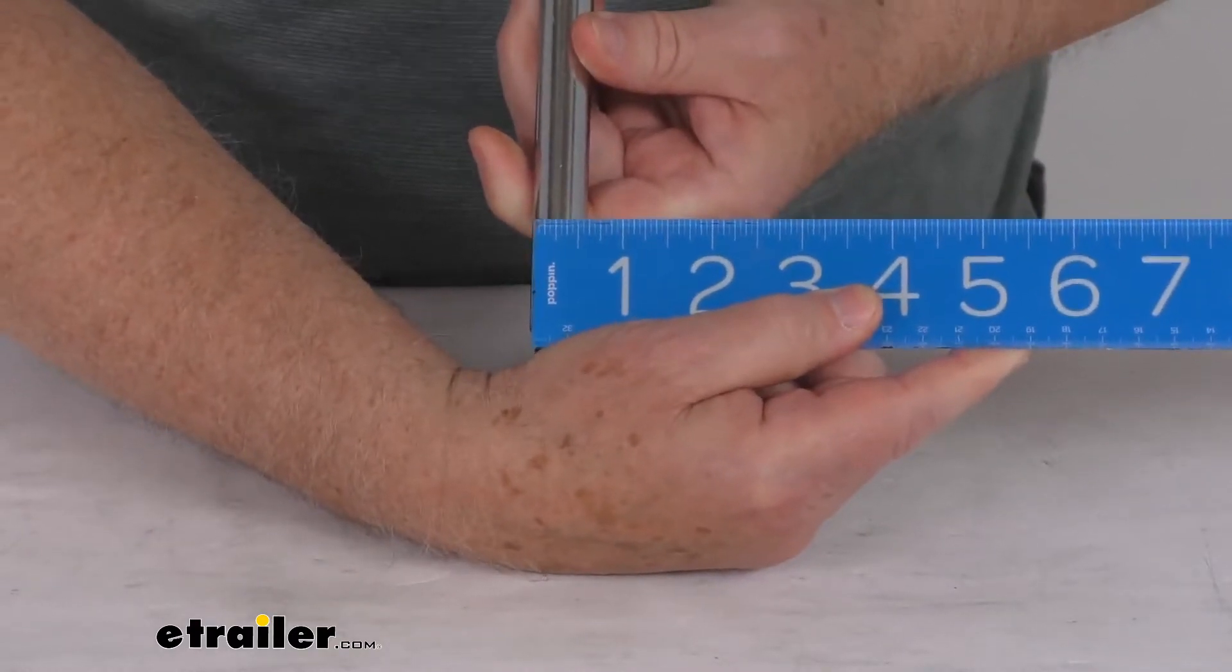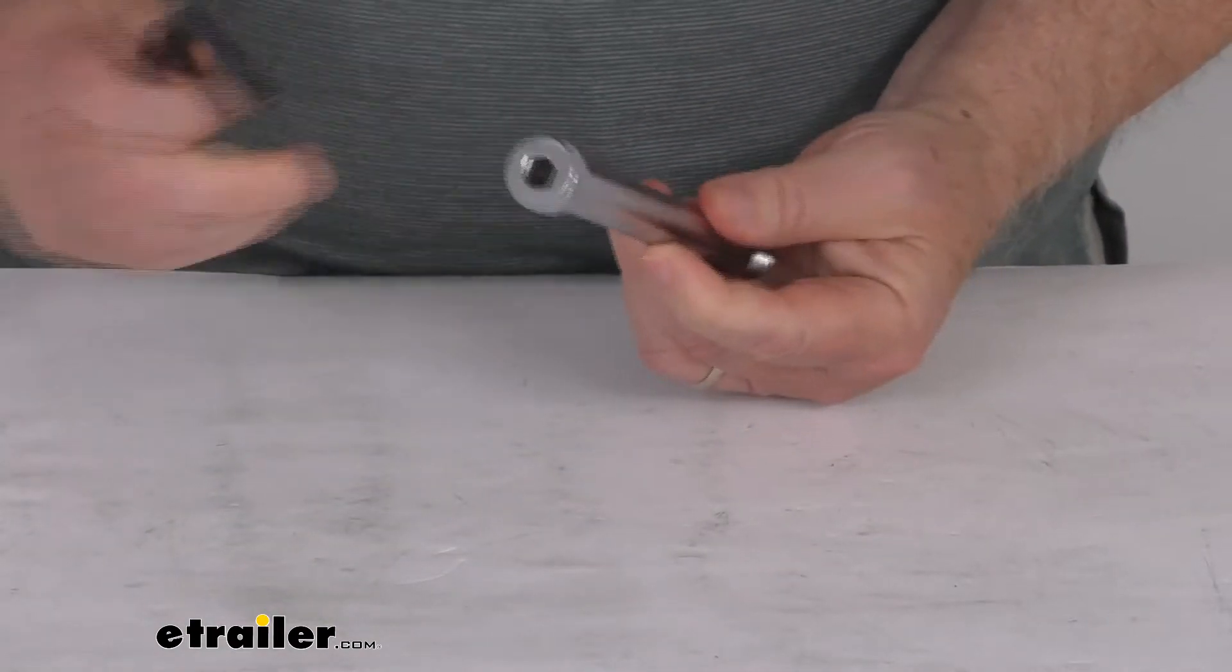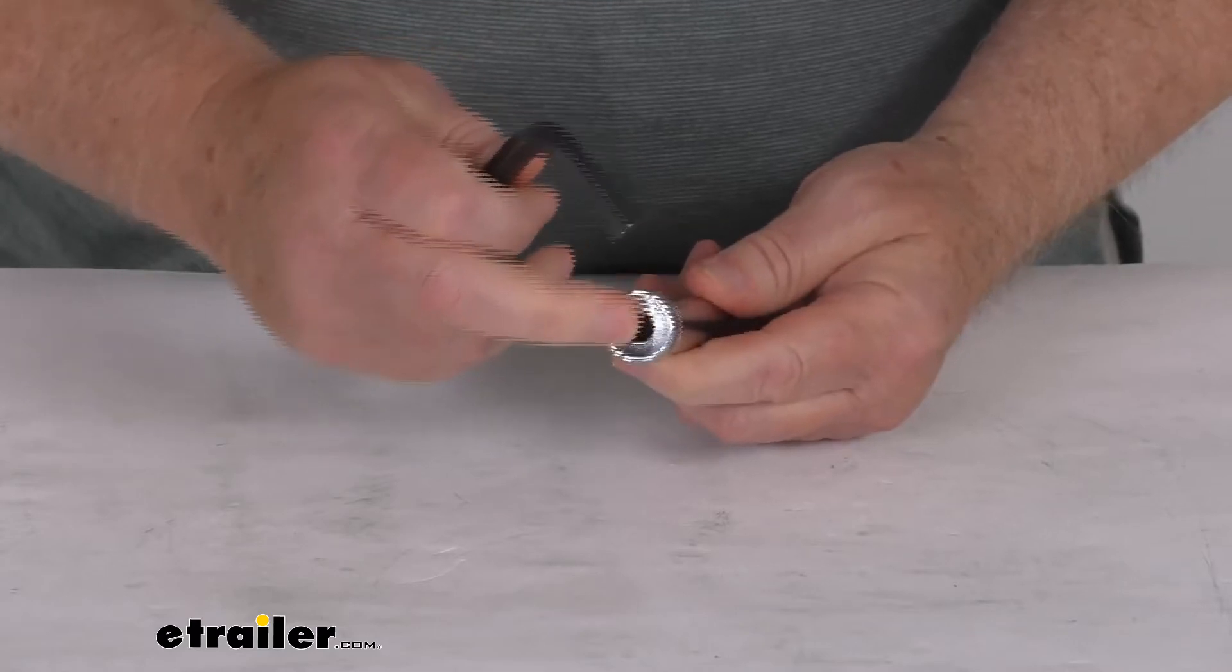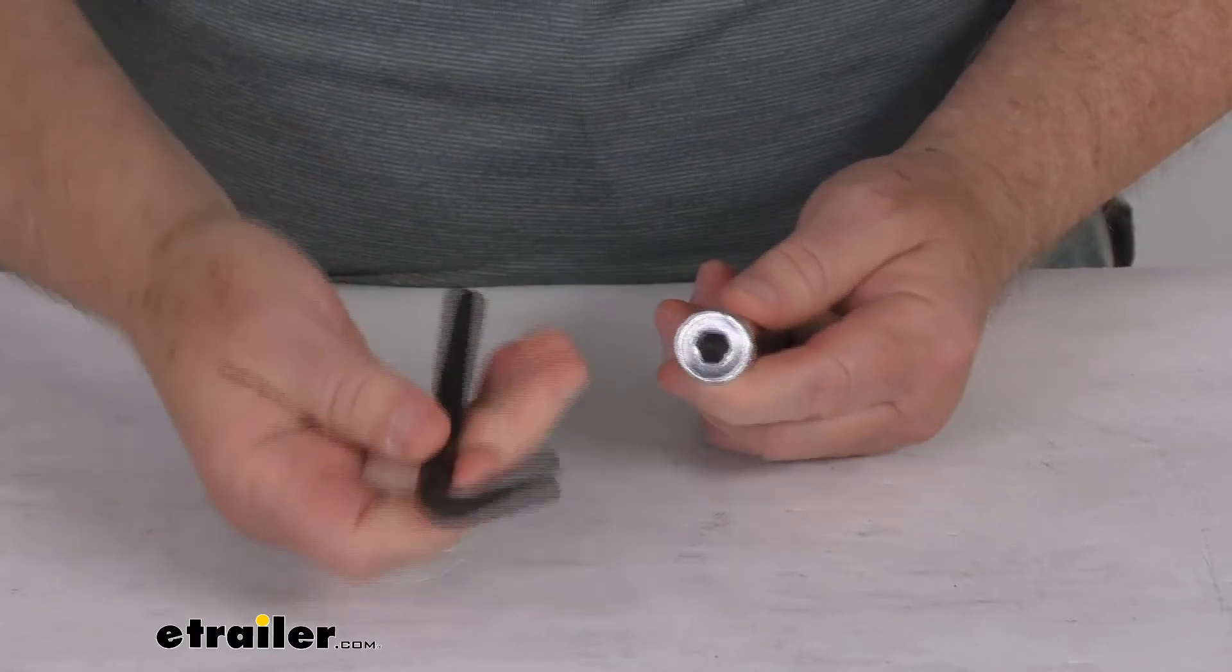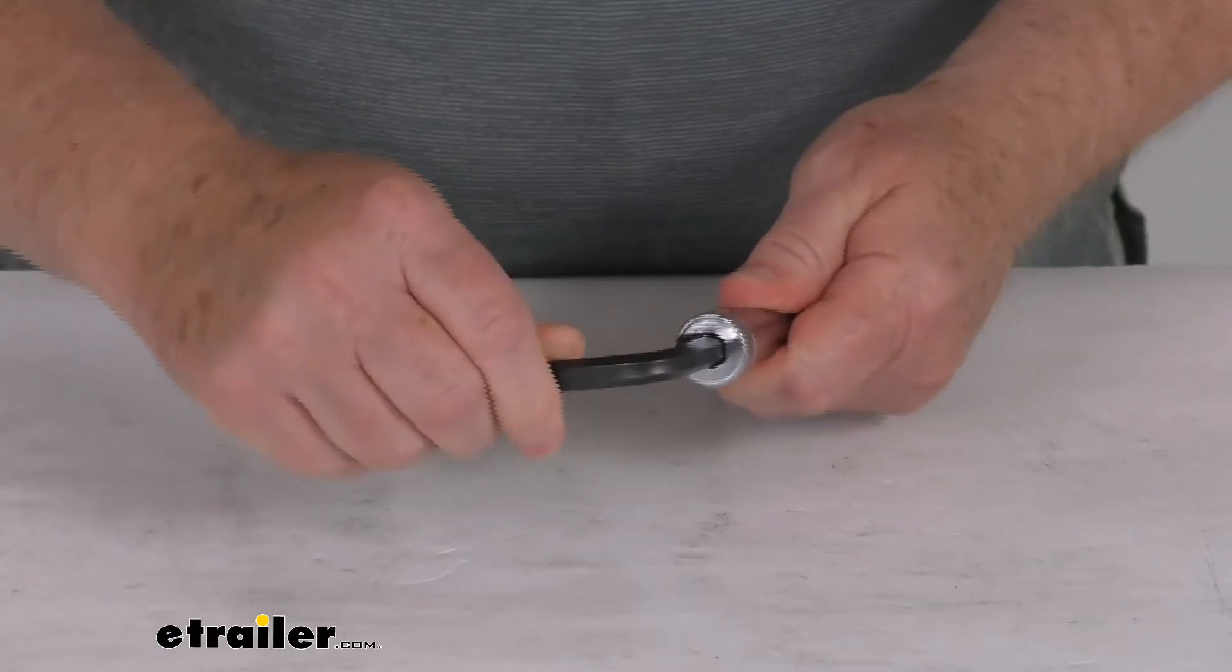The diameter is right at five-eighths of an inch, and the head size is an 8 millimeter internal head size. You can see I have an 8 millimeter Allen wrench that fits exactly in there.